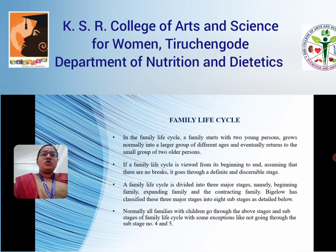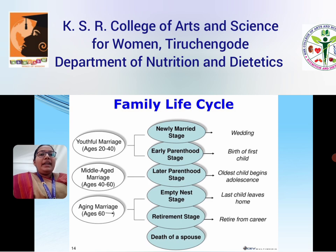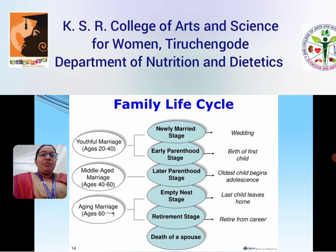Normally, all families with children go through the above stages and sub-stages of the family cycle, with some exceptions like not going through sub-stages four and five. The first stage is the newly married and early parenthood stage, which is youthful marriage, ages 20 to 40, when the wedding and birth of the first child occur. Next is the latter parenthood stage, which is middle-aged married life, ages 40 to 60, when the oldest child begins adolescence. Next is the empty nest stage and retirement stage, above age 60, aging marriage, retired from career, and the last child leaves home. After that, death of spouse — this is the end of the family life cycle.